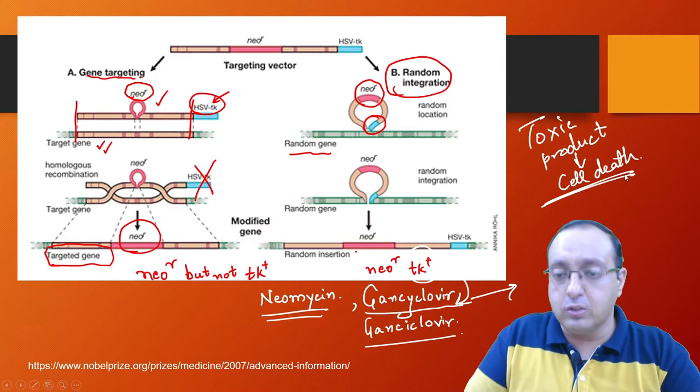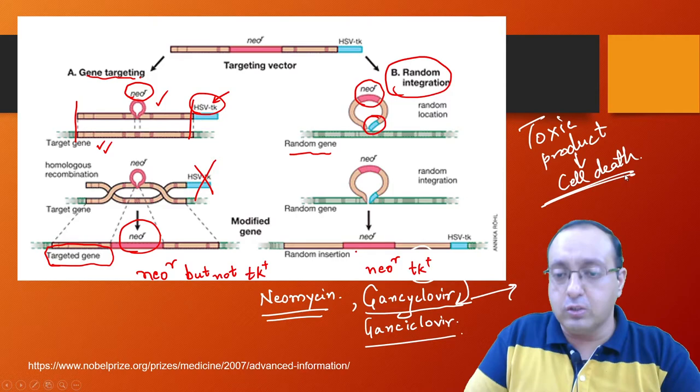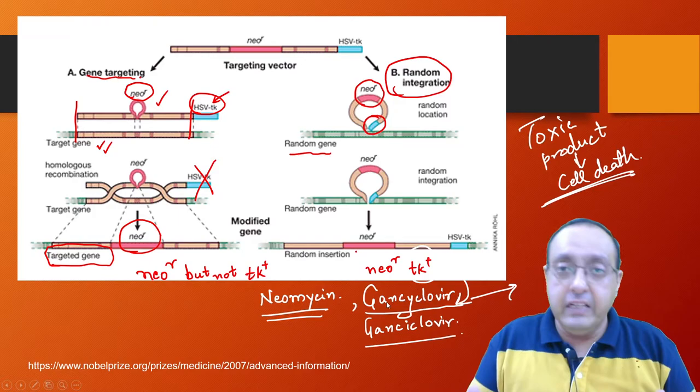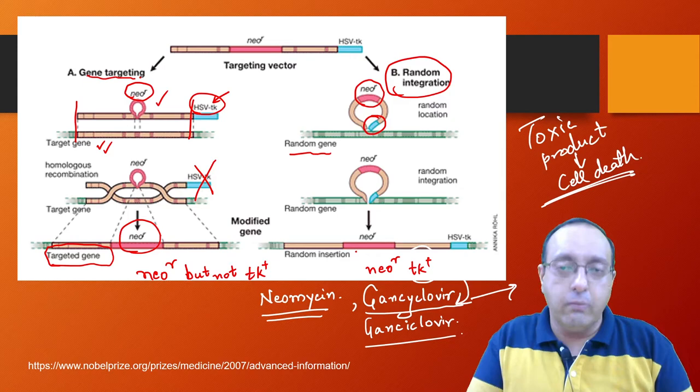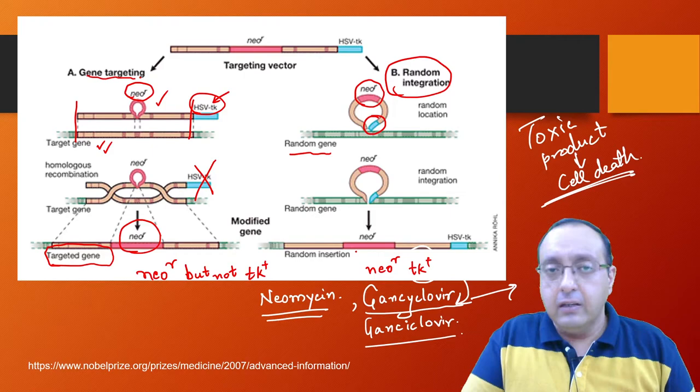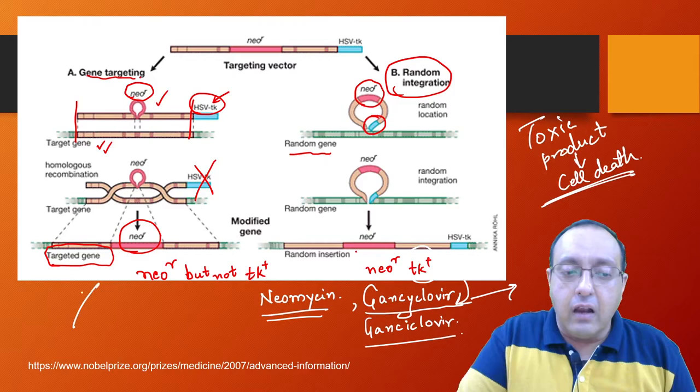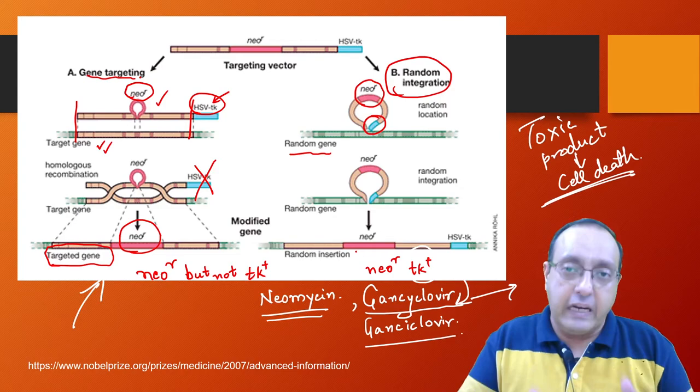Because of the toxicity caused by this metabolic byproduct, the cells which have randomly integrated your transgene will die off. So this is the advantage of this dual method of positive-negative selection. We use neomycin as well as ganciclovir in the selection medium. And that will hopefully allow only these cells to survive and not these cells. That's the concept of positive-negative selection.